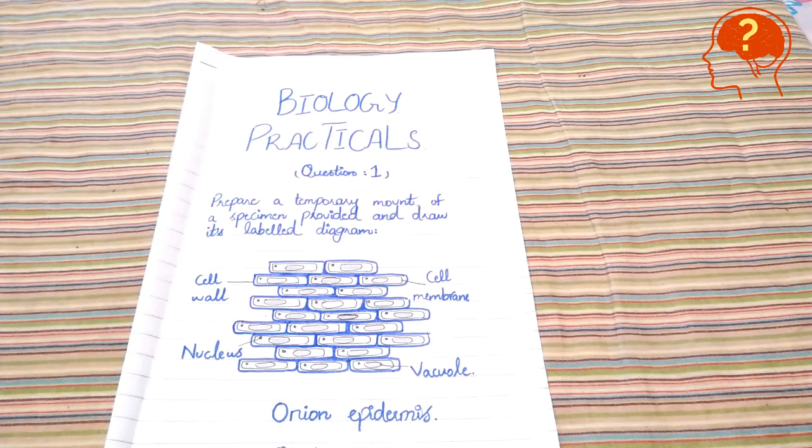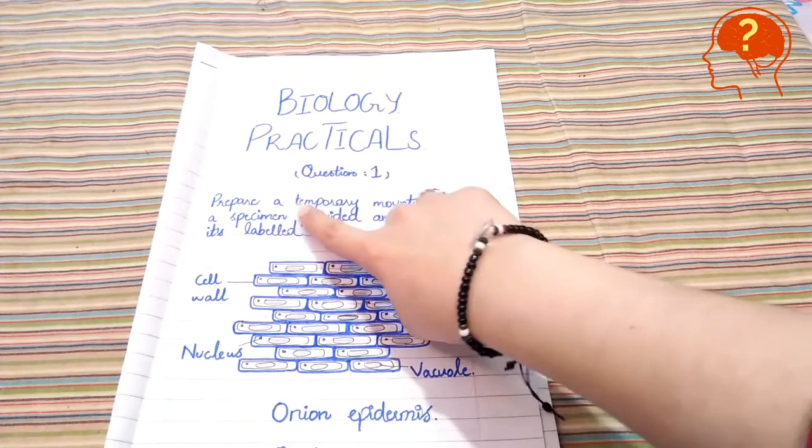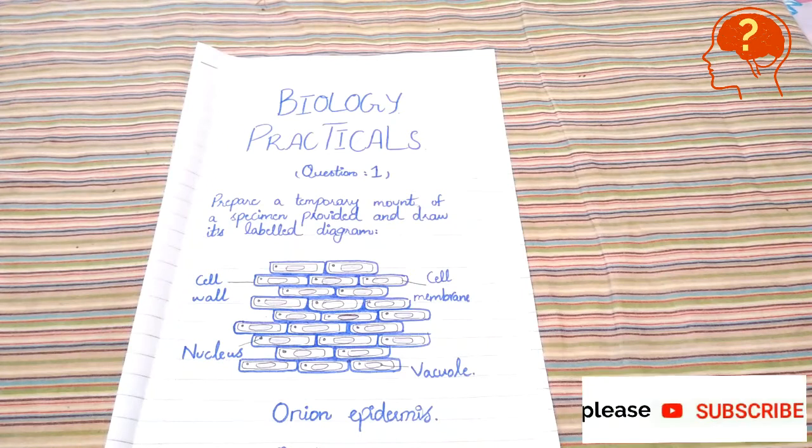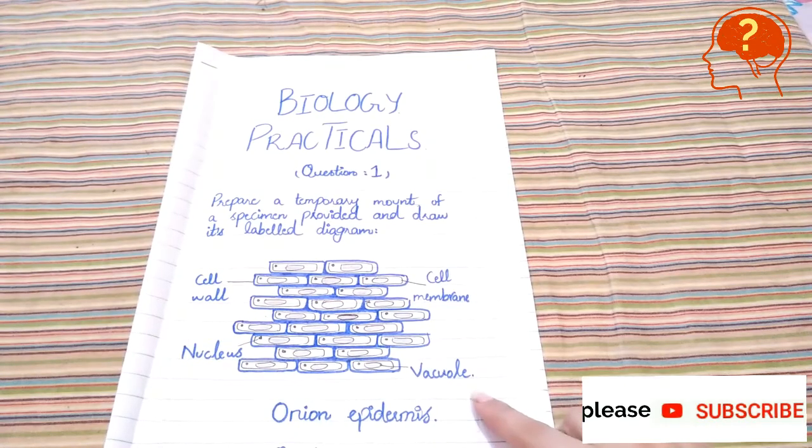Question number one: prepare a temporary mount of a specimen provided and draw its labeled diagram. He was given onion epidermis, so he had made that. You can see here.